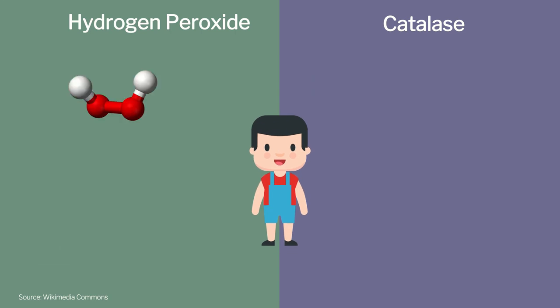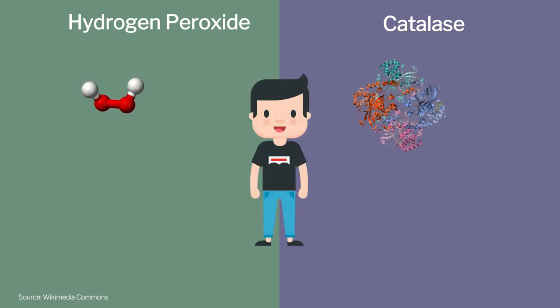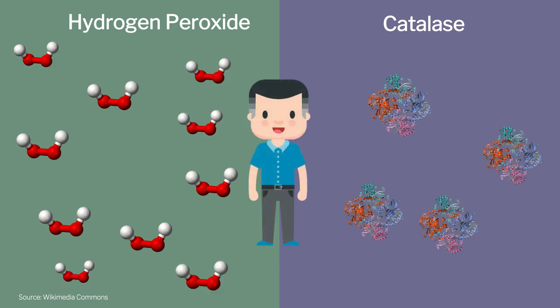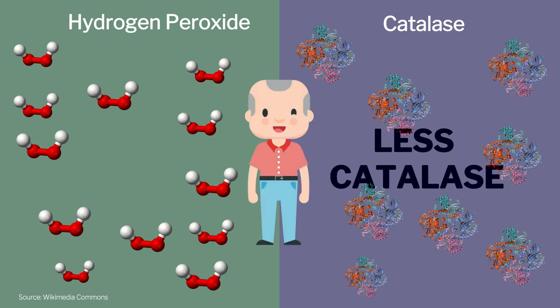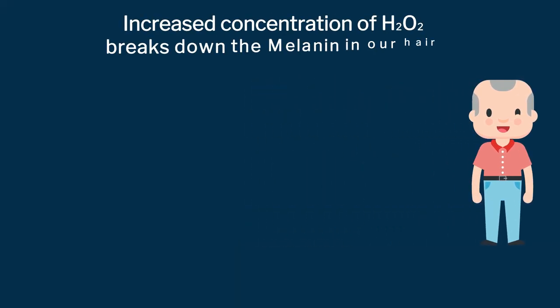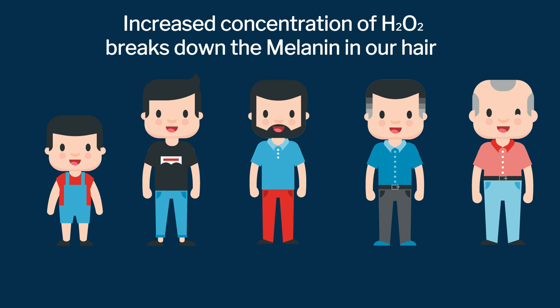Hydrogen peroxide and the catalase enzyme play a big role in our human body too. Our body naturally synthesizes both hydrogen peroxide and catalase. However, as we get older, our bodies continue to produce hydrogen peroxide but make less catalase. Because there is less catalase available to break down the hydrogen peroxide, its concentration in the body increases. The increased concentration of hydrogen peroxide breaks down the melanin in our hair and causes our hair to lose its color and turn grey or white.